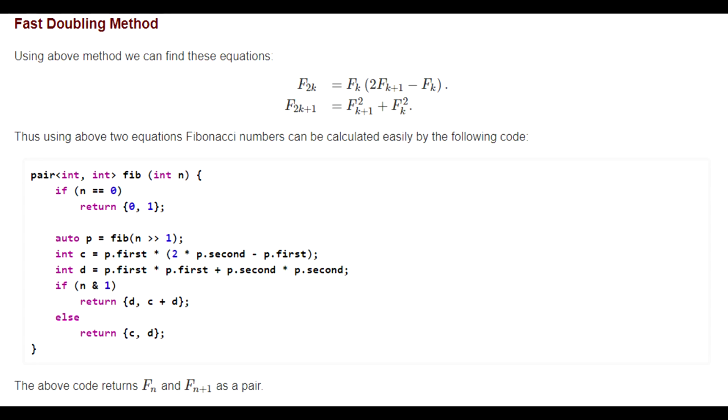Basically this code returns F of n and F of n plus 1 as a pair and it solves the binary exponentiation and it solves the faster way to calculate the Fibonacci numbers pretty quickly. So yeah hope you guys enjoy this video, rate comment subscribe, I'll check you guys later peace.